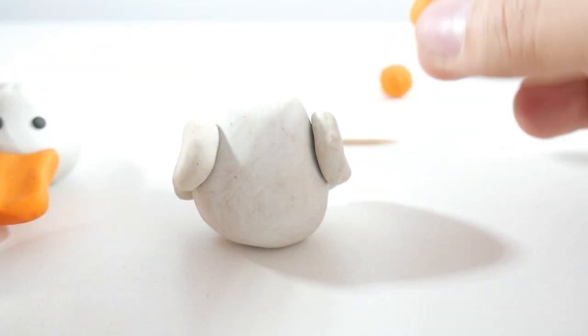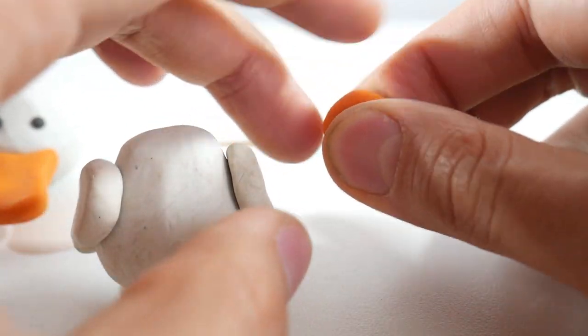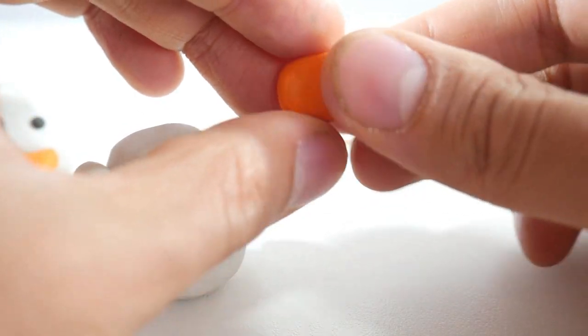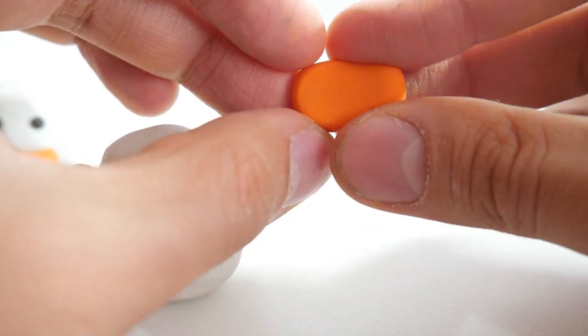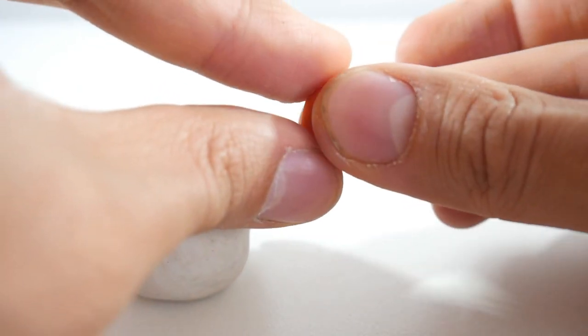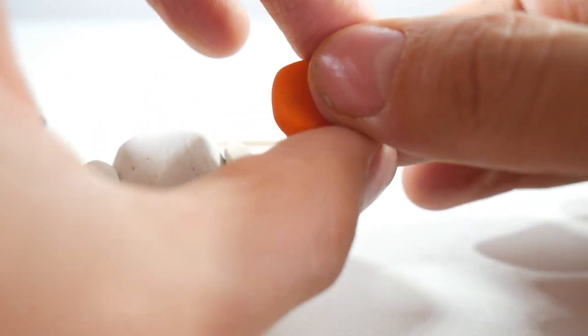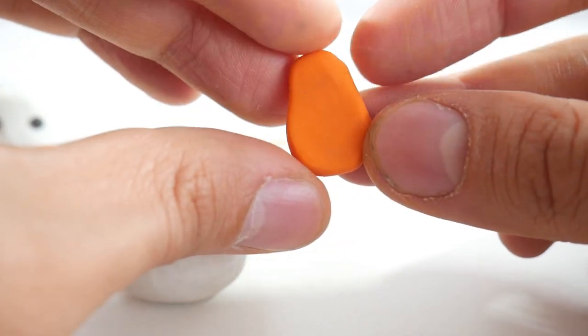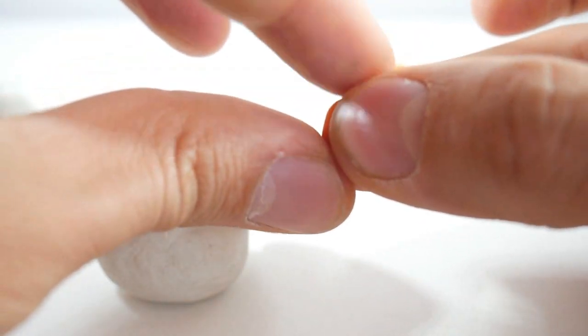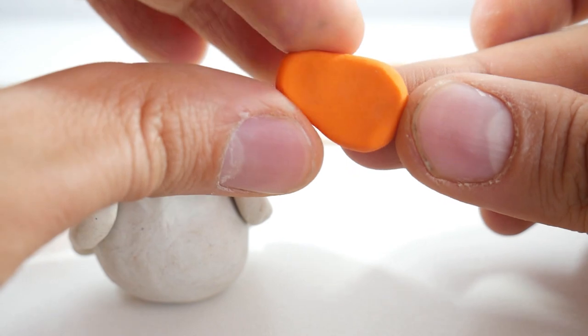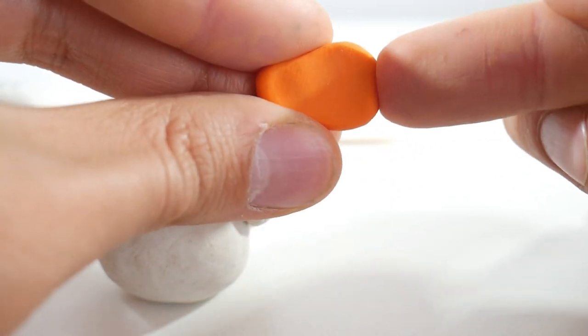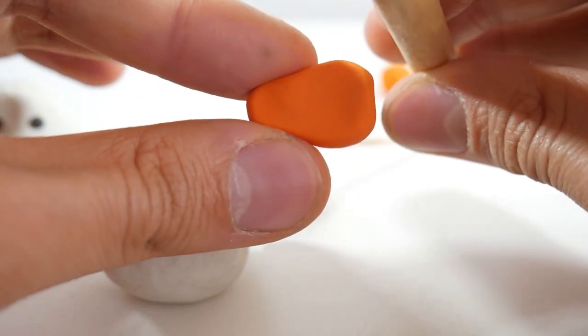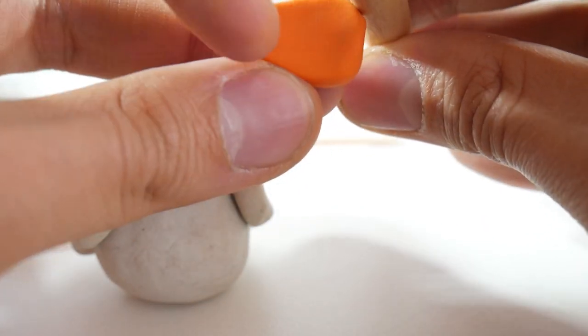Alright, let's get those feet in place. Take a ball of orange clay and shape it into an oval. Using a pencil, make two curves.